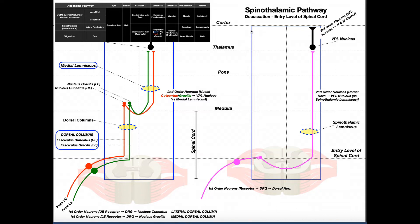This blue rectangle represents the entire nervous system. This dotted vertical line is the midline, which will help us determine where neurons have crossed over to the other side, because they are going to decussate just as we saw in the DCML pathway, but at a different spot. The horizontal line represents the entry level of the spinal cord, where the first-order neuron enters. The entire length up to the medulla represents the spinal cord. Above that we have the pons, then the thalamus, and then the cerebral cortex at the highest brain center.